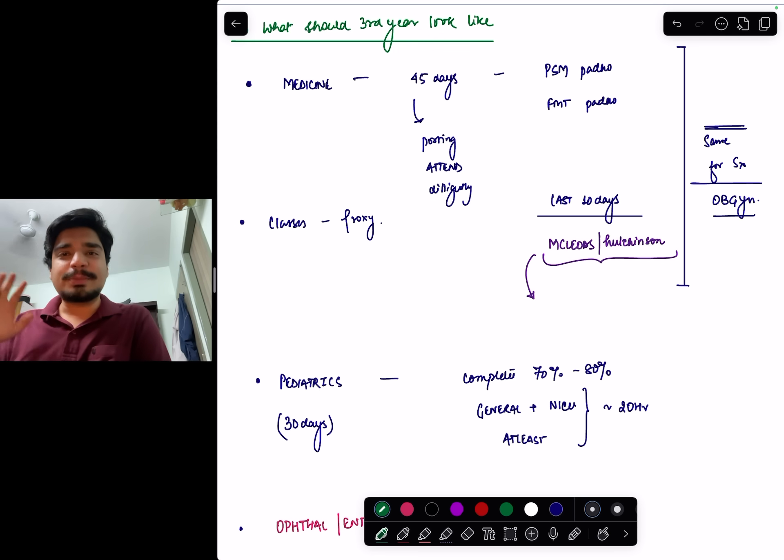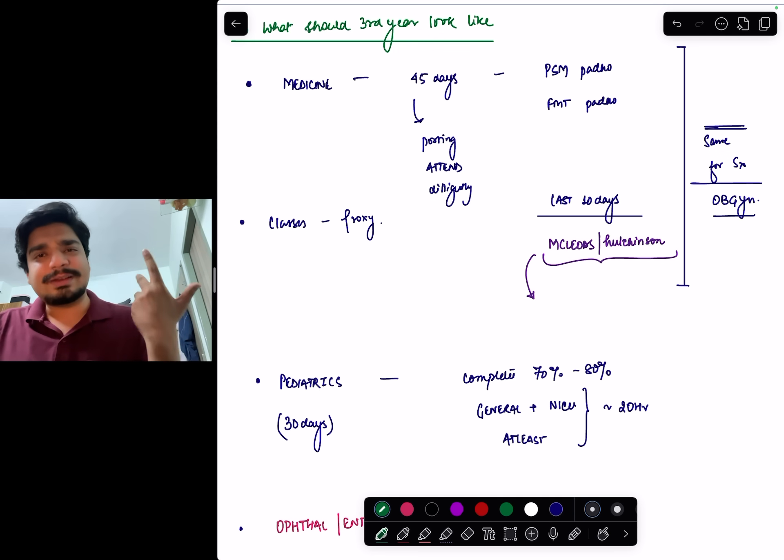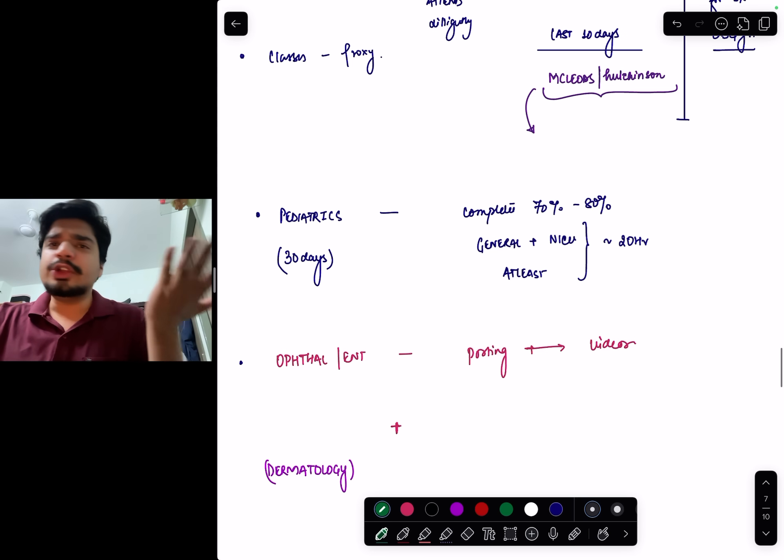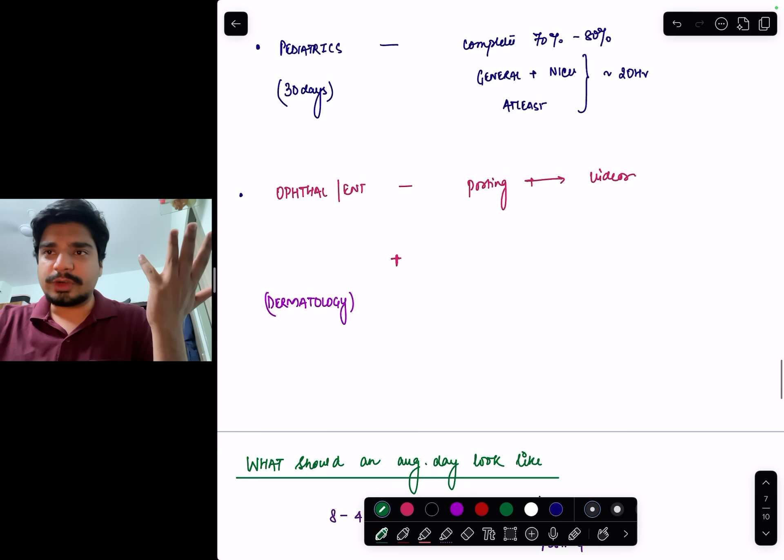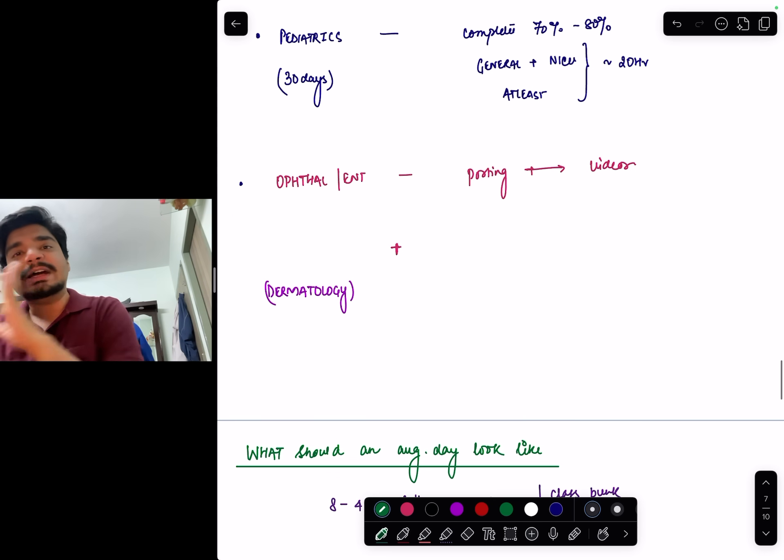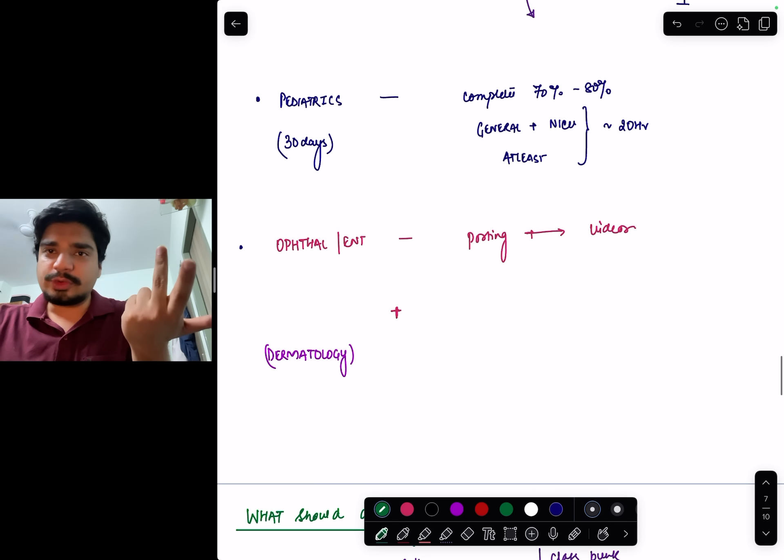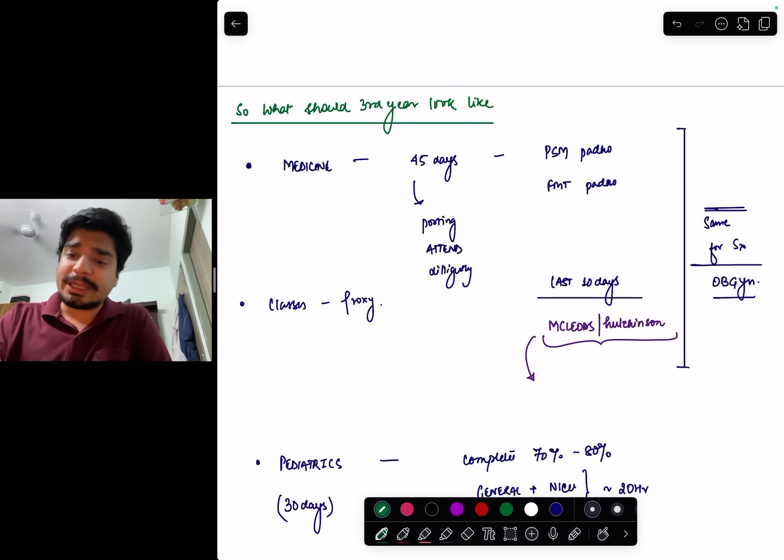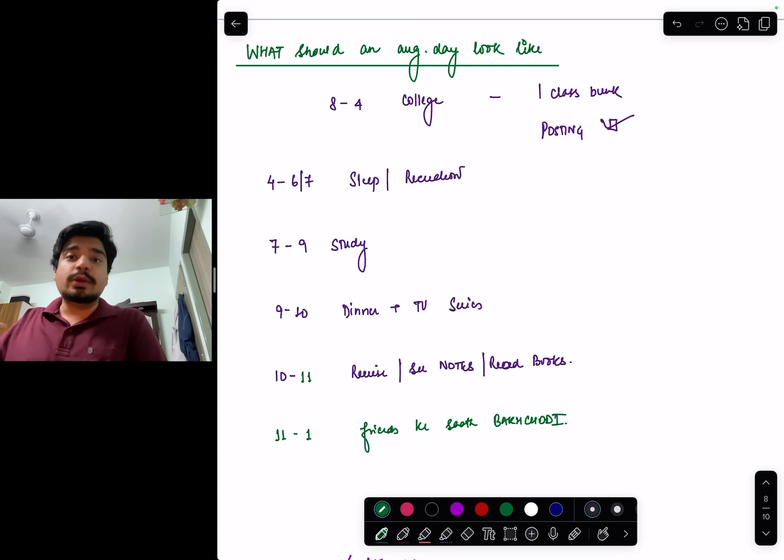Theory classes - I'm not a big fan. You want to do proxy, do proxy. In our college we never used to have attendance in final prof. During pediatrics posting, cover 50-70% of pediatrics, at least general pediatrics plus NICU. There are around 15-20 videos on the higher side in any platform. In 20-30 days you can watch those videos. During ophthalmology and ENT postings, complete those subjects - the videos and notes. Along with one or two minors which you can consider, like derma. This is how third year should look like.